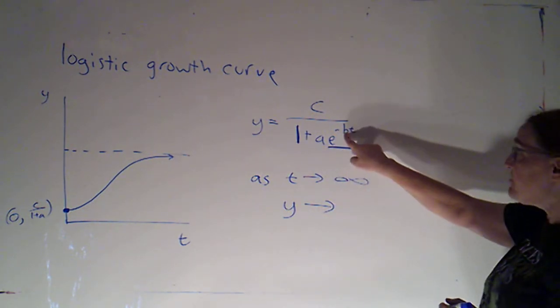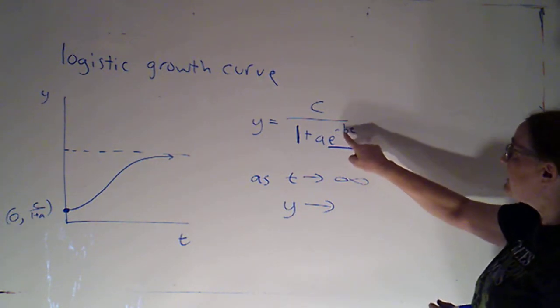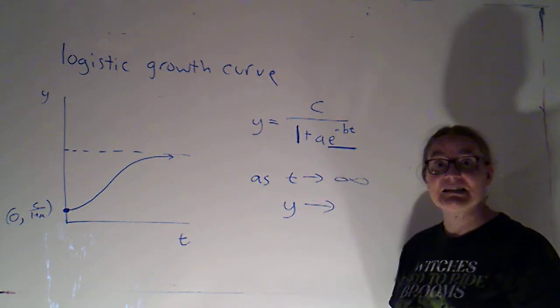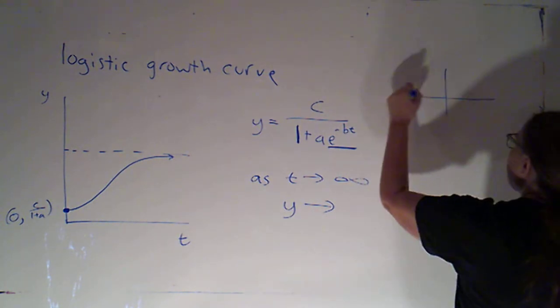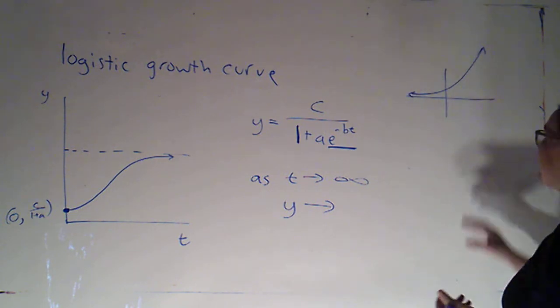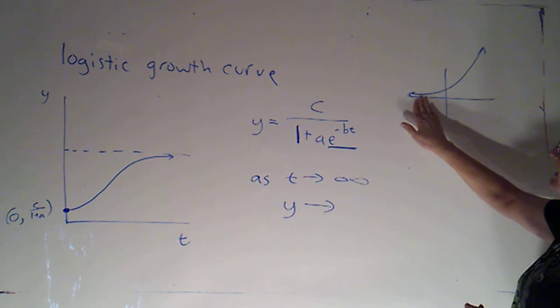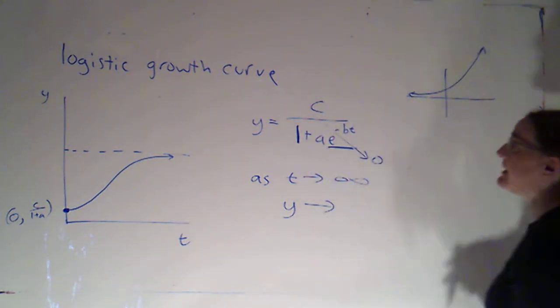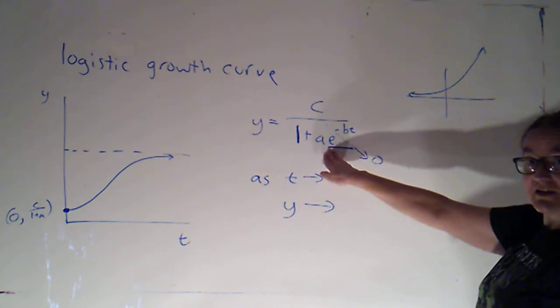Because remember, b we said was positive, so as t goes to infinity, negative b times t is going to be going off towards negative infinity. It's going to be becoming big and negative. But what happens to my exponential function, y equals e to the t, when the exponent goes to negative infinity, it approaches 0. So this piece is going to be going to 0. That's going to kill off this second term on the bottom.